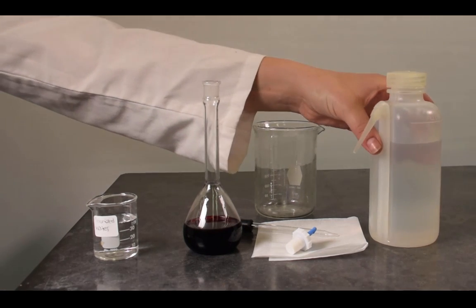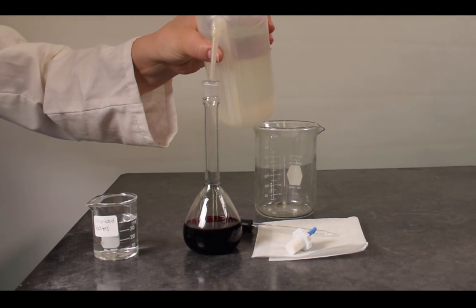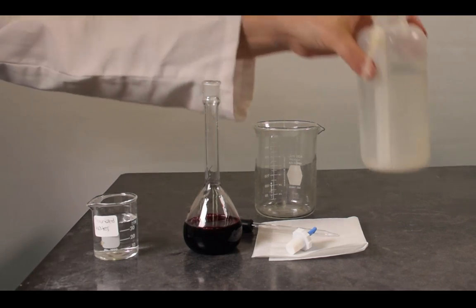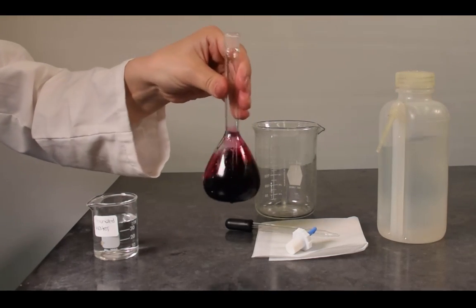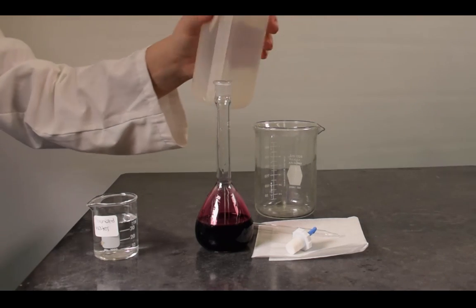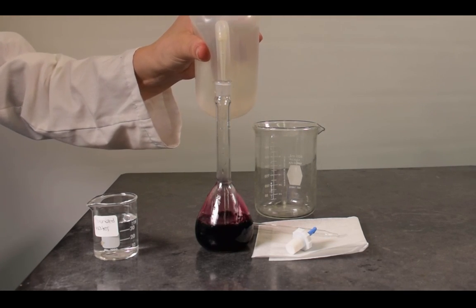Fill the volumetric flask to two-thirds of its volume with the required diluent. In this example we are using deionized water. Once the flask is two-thirds full, swirl the flask to initiate mixing. Be sure to not stopper the flask at this point.